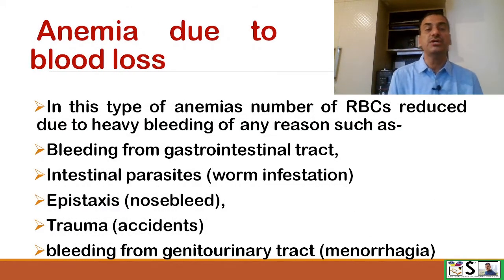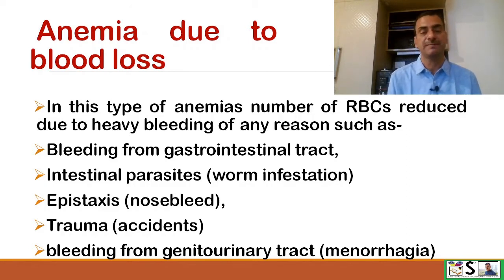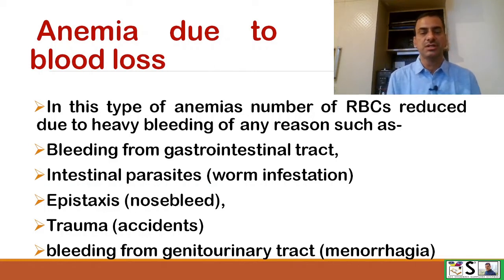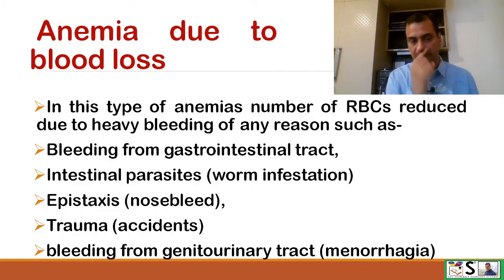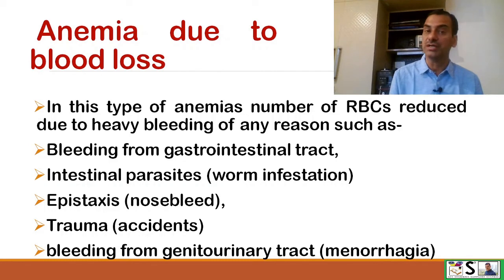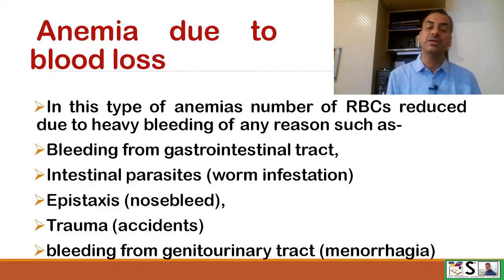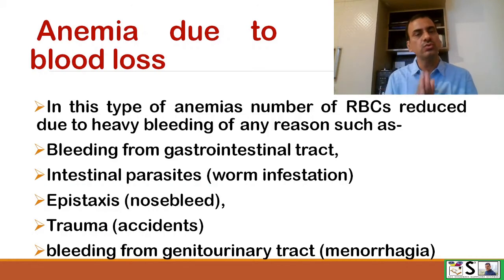The third type is anemia due to blood loss. In this type of anemia, the number of RBCs is reduced due to heavy bleeding from any region, such as bleeding from the gastrointestinal tract, bleeding due to intestinal parasites or worm infestation, epistaxis or nosebleed, trauma, accidents with severe hemorrhage, and bleeding from the genitourinary tract such as menorrhagia. All these contribute to anemia.